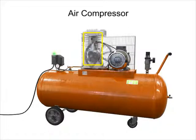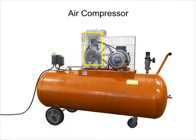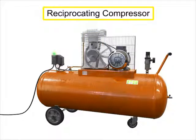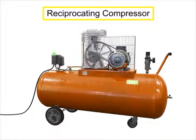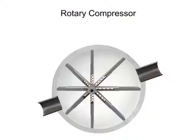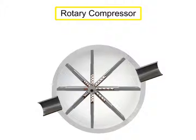Compressors with a piston as the compressing element are called reciprocating compressors. Compressors can also be made with vanes or impellers. These types of compressors are called rotary compressors.